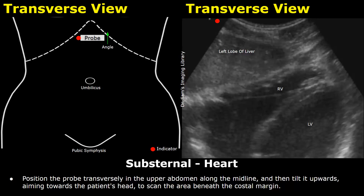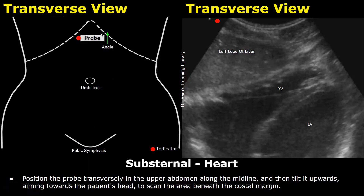The scan is performed to look for internal bleeding. On the left is a schematic diagram showing probe placement on a patient in a supine position. The dotted lines are the right and left costal margins, the sternum is in the substernal area, this is the umbilicus, and down here is the pubic symphysis. The white box is the ultrasound probe and the red dot is the indicator or orientation marker.